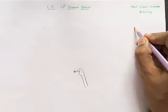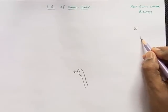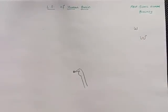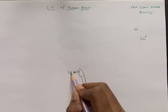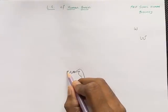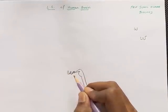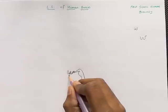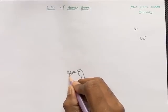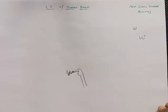We write W, right? Let's try to write W in a different fashion, somewhat like this. When you write it like this, the structure forms. Now since it is W, let's make it double. In the center, put one small stick and one small seed-like structure.